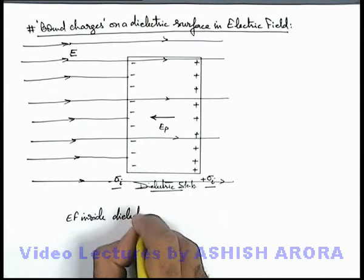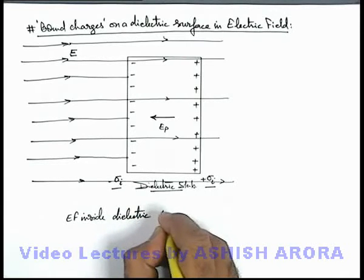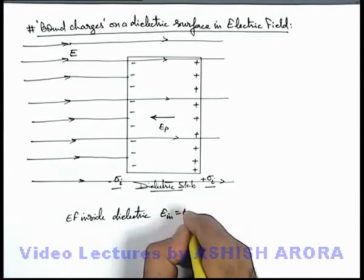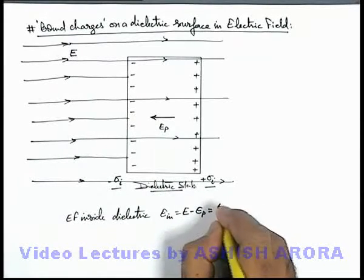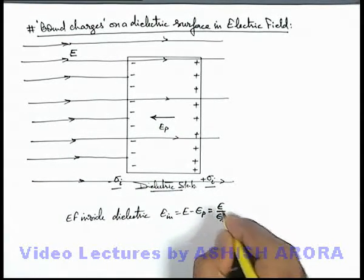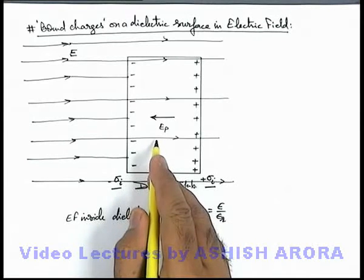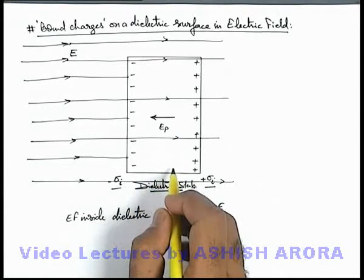This can be written as E_inside equals E minus Eₚ. About which we know it can be written as E by εᵣ, we have discussed in the previous section if εᵣ is the relative permittivity of the dielectric medium.